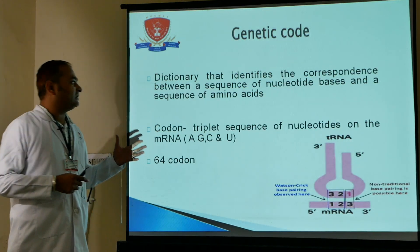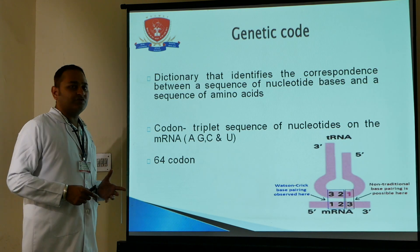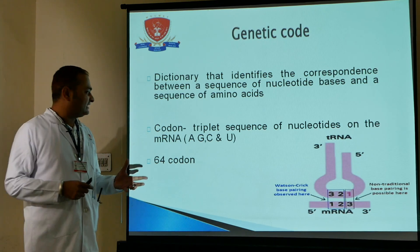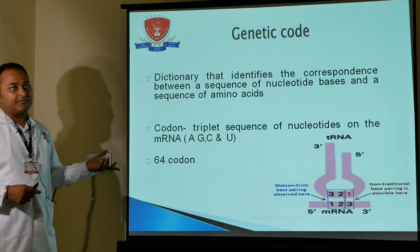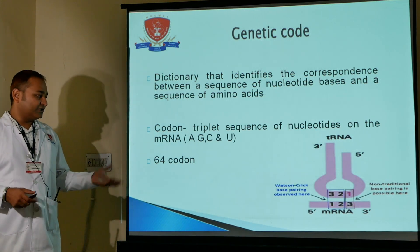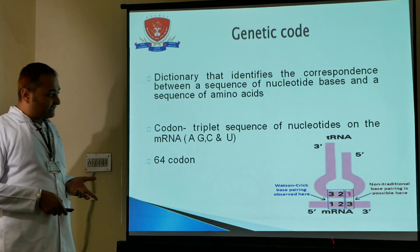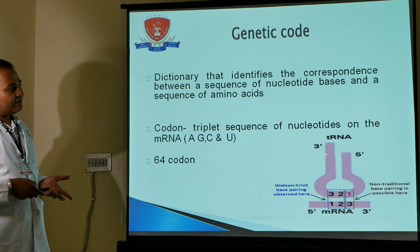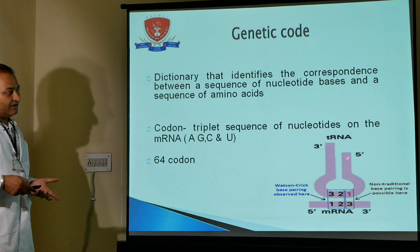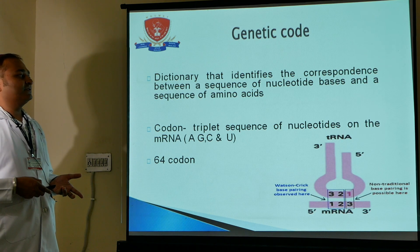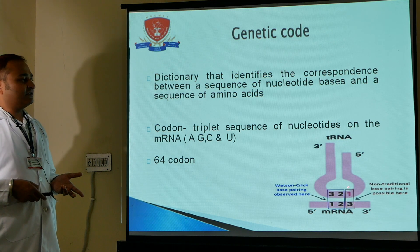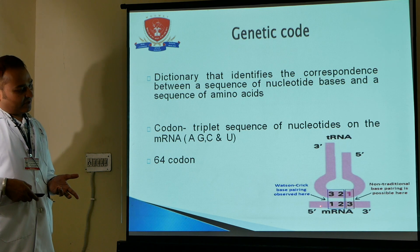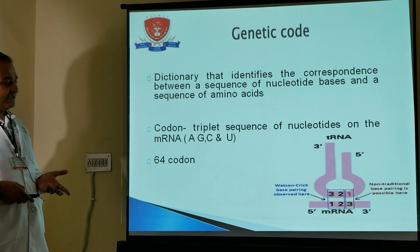The genetic code dictionary identifies the correspondence between the sequence of nucleic bases and the sequence of amino acids. A codon is a triplet sequence of nucleic acid in messenger RNA, involving purines and pyrimidines — 64 codons total. On the transfer RNA, amino acids are attached at specific sites according to the anticodon, which identifies the codon on messenger RNA.